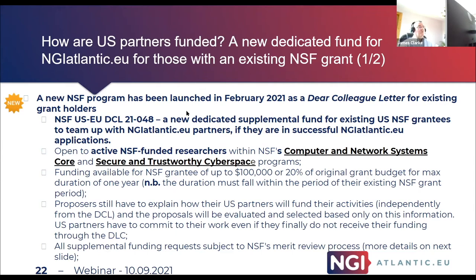The funding available is up to $100,000 US dollars or 20% of the original grant budget, for a duration of one year. The duration of the project must fall within the period of their existing grant. Proposals still need to explain how their US partners will fund activities independently from the DCL, because the DCL proposals have their own evaluation process outside of our evaluation process and there's no guarantee of success. That's why US partners must commit to the work even if they don't receive DCL funding. Supplemental funding requests are subject to the NSF's merit review process.